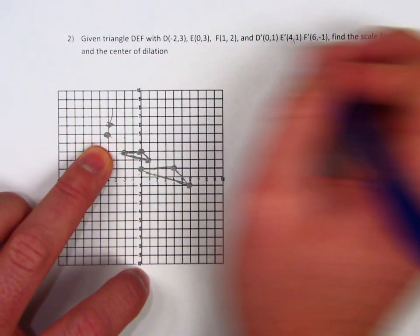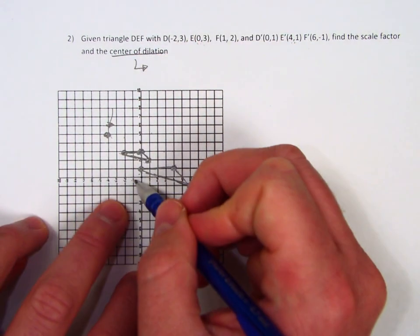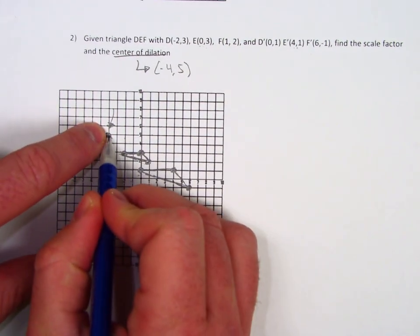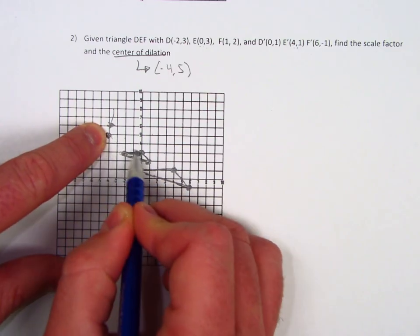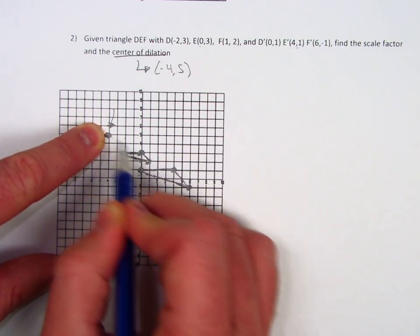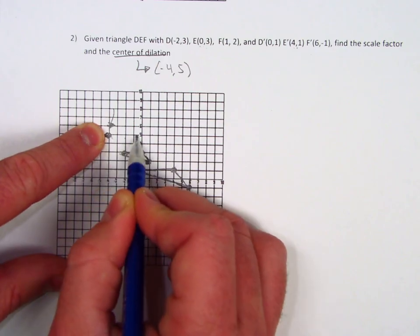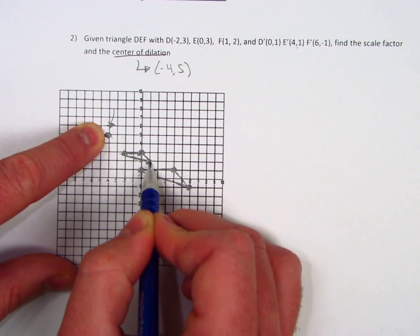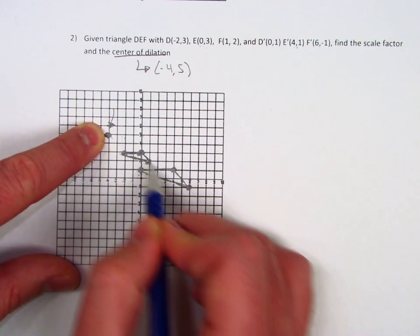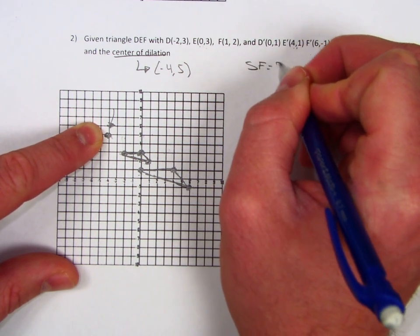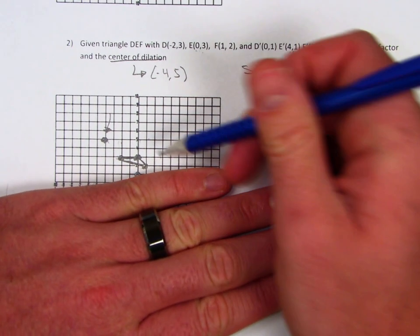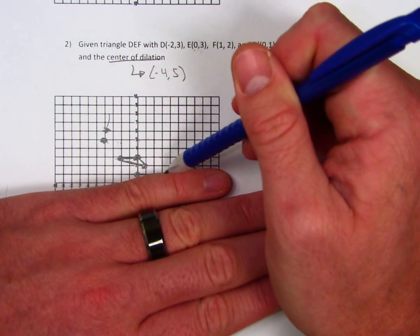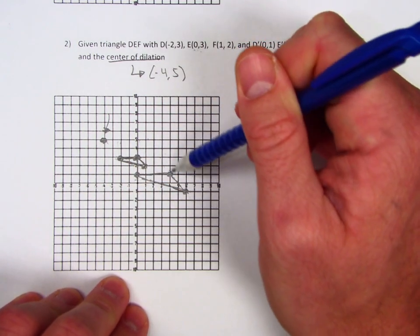So this is our center of dilation: negative 4, 5. For the scale factor, from our center of dilation to the pre-image is a scale factor of 1, and it looks like we did that process twice to reach the image. So our scale factor is 2. You can check by covering the image, counting from the center to the pre-image, and repeating that to confirm it produces the image.